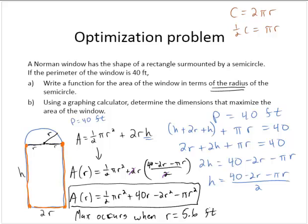If r is 5.6 feet, then 2r would be 5.6 times 2. That's 11.2 feet. And this r would be 5.6 feet.